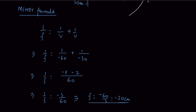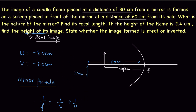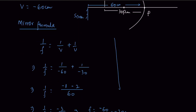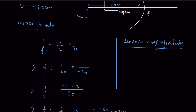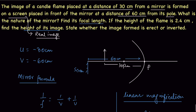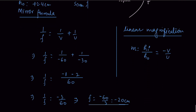Now we have to find the height of the image. For this, we use the linear magnification formula: m = height of image divided by height of object = −v/u. The height of the object is already given as 2.4 centimeters, so height of object is plus 2.4 centimeters. These values are all based on sign convention.